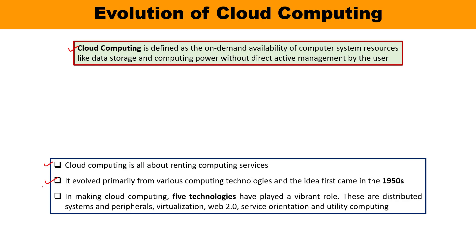When talking about cloud computing, there are various technologies which have played a very key role. There is a set of five technologies: distributed systems and peripherals, virtualization, Web 2.0, service orientation, and utility computing. These are the technologies which have played a very vibrant role. Let us discuss one by one how cloud computing evolves from year 1952 till now.